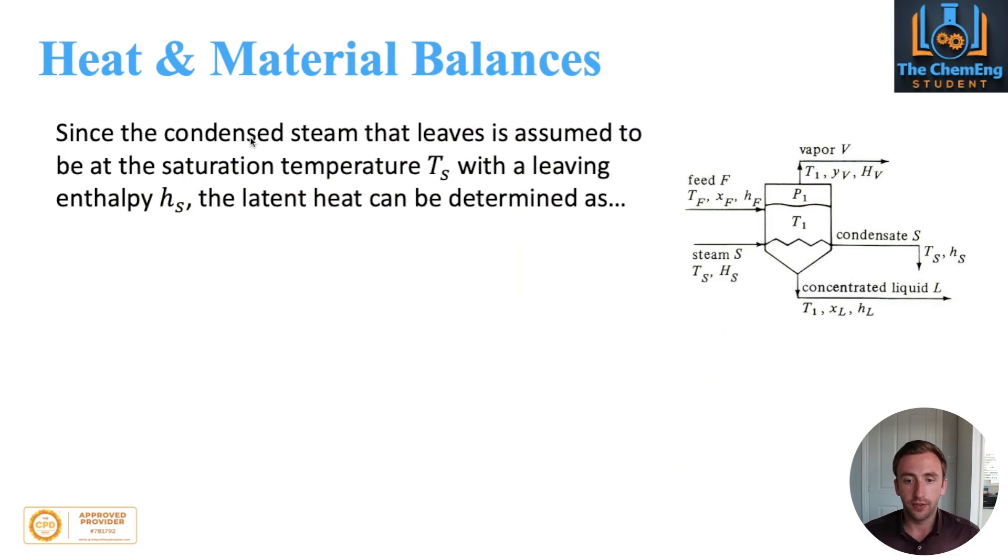If we start off with just a general overall balance, the condensed steam will leave and we'll assume it's at saturation temperature Ts. That means the enthalpy is Hs, the enthalpy of the liquid. What that tells us is we can determine what the latent heat will be. The latent heat is the temperature associated with a phase change, i.e. we go from liquid to vapor or vapor to liquid. So we can find the latent heat of the steam by this equation: lambda equals Hs minus hs.